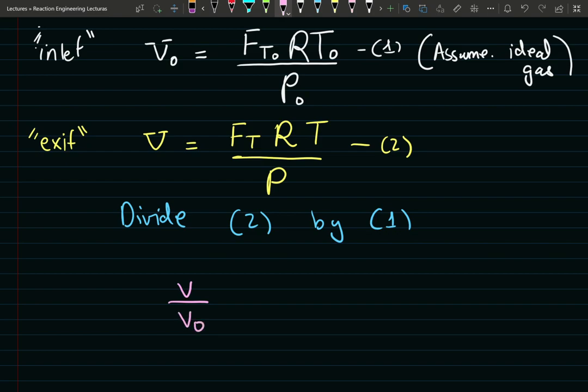You'll see that the result we get is going to look something like this. V over V naught, exit over inlet volumetric flow rate, is equal to exit over inlet molar flow rate. The ideal gas constant is going to drop out. I'm going to have exit temperature over inlet T naught and inlet pressure over exit pressure.